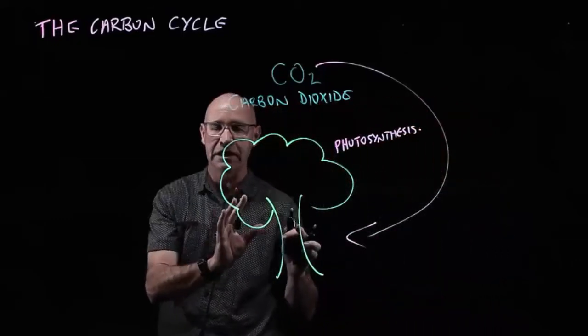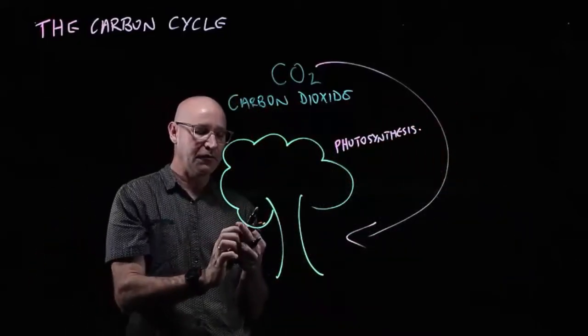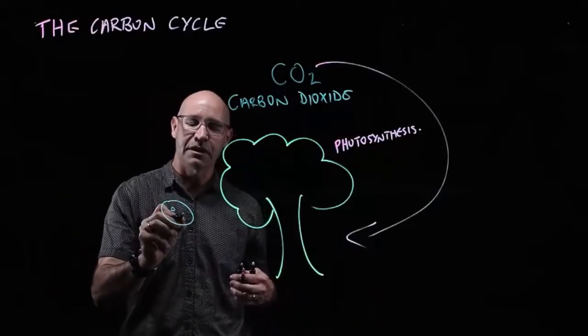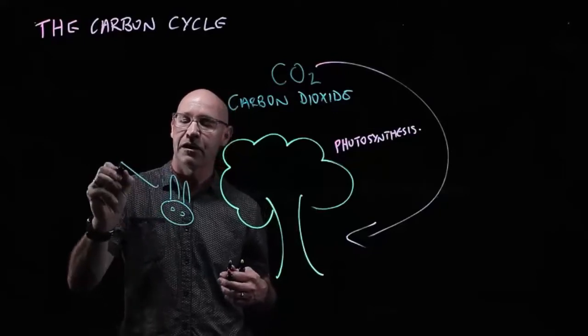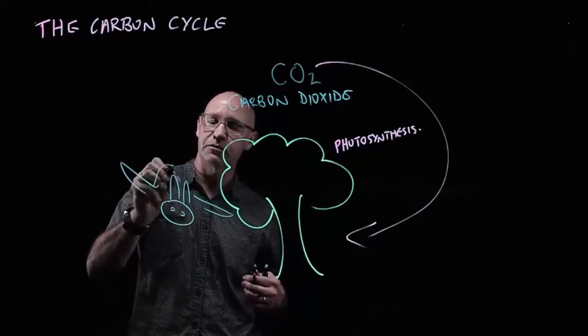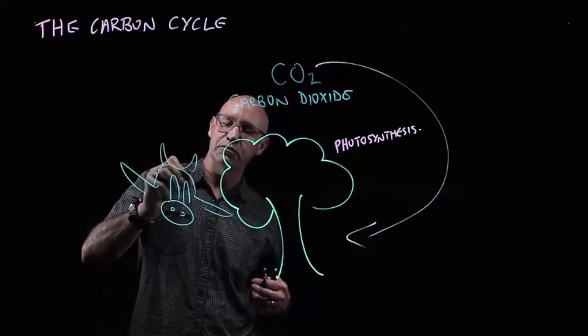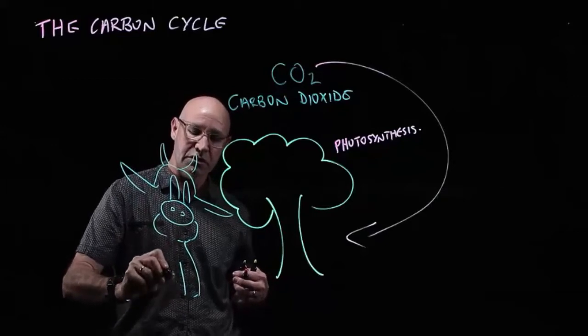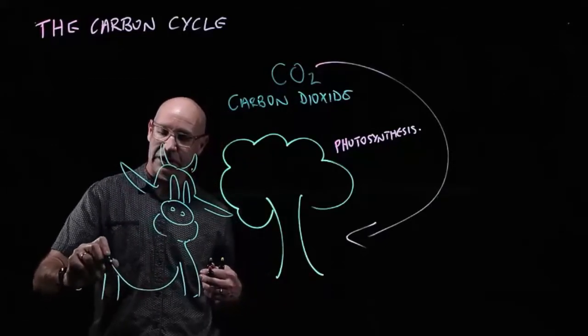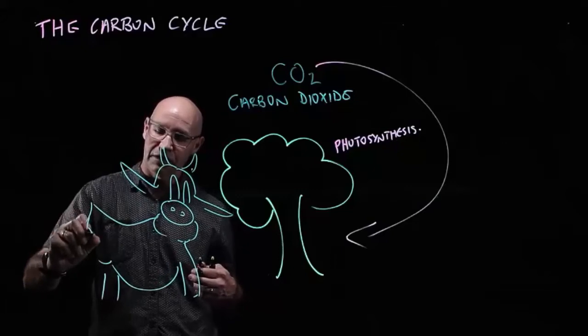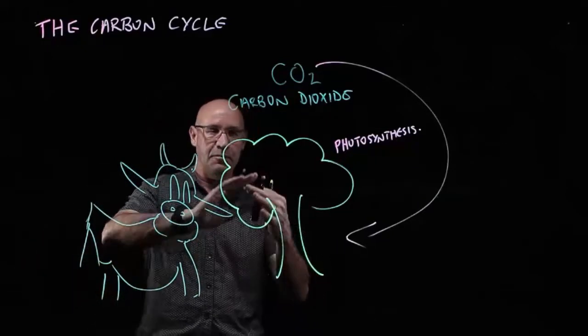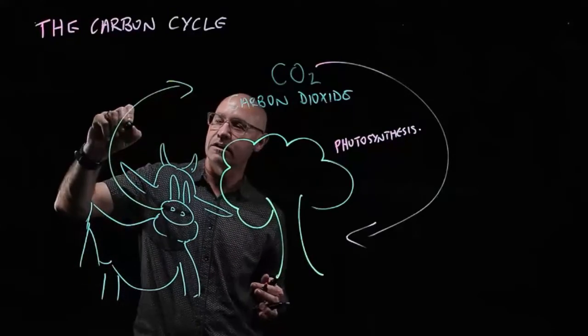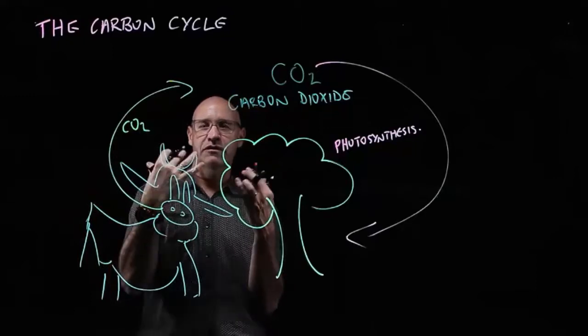Now from this point here it can go back up into the atmosphere in a couple of ways. Firstly, the carbon is eaten by our consumers, for example our cows or bulls. So they consume the plants and they breathe out carbon dioxide. So carbon dioxide goes out in the breath.